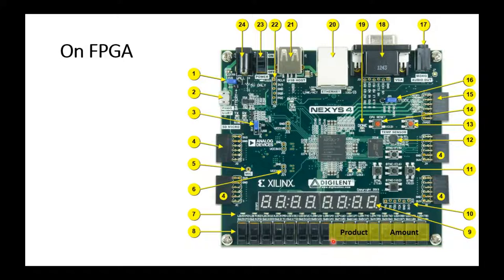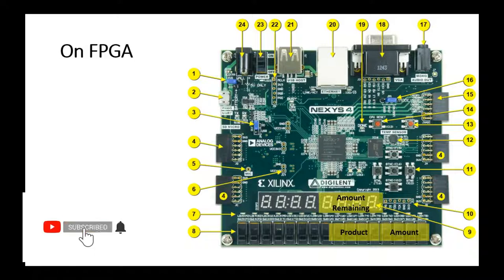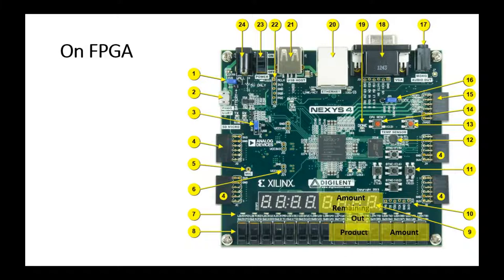We have 4 products, and therefore we use 4 switches for the selection of those 4 products. These 4 LEDs will display the remaining amount or user amount on the panel, and if the user amount is greater than the product cost, it will display the output at the corresponding LED.